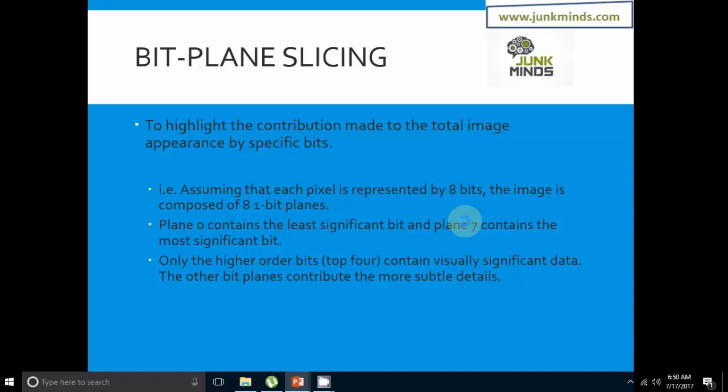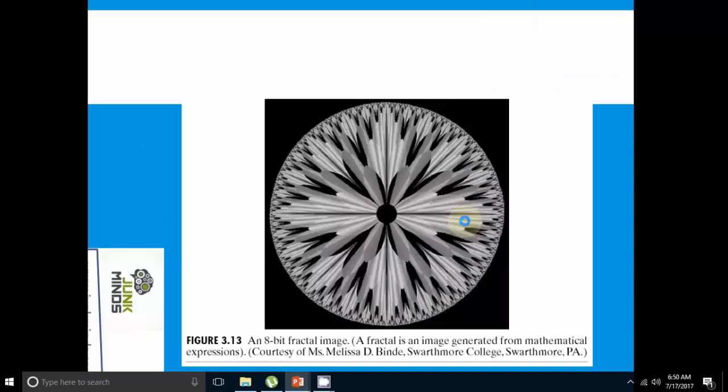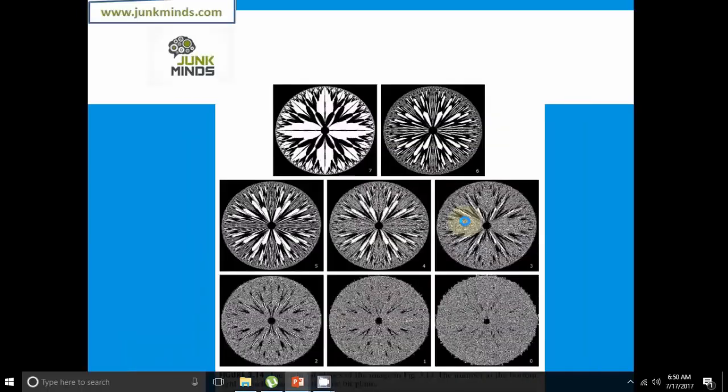Only the higher order bits, the top 4, contain visually significant data, and the other bit planes contribute more subtle details. This is an 8-bit fractal image, which is generated from mathematical expressions. These are the eight bit planes of the image.